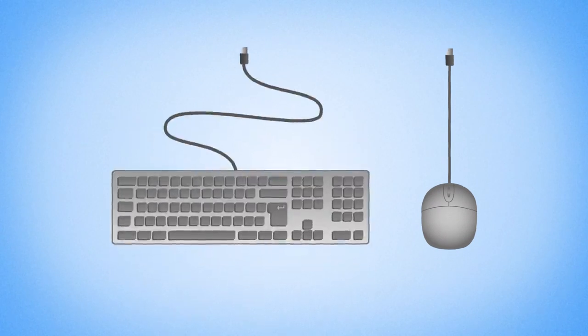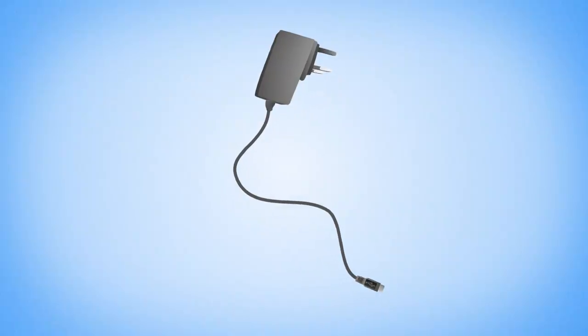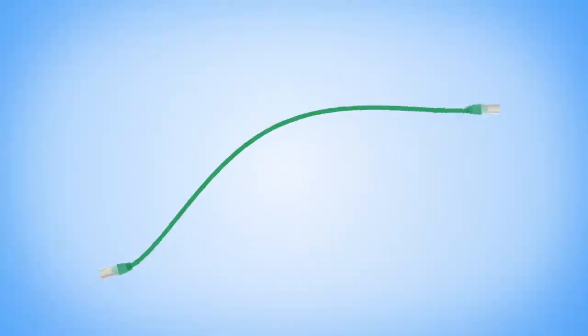Next, a USB mouse and keyboard. A micro USB power supply, like one you'd use to charge your mobile phone. And an Ethernet cable to get online.